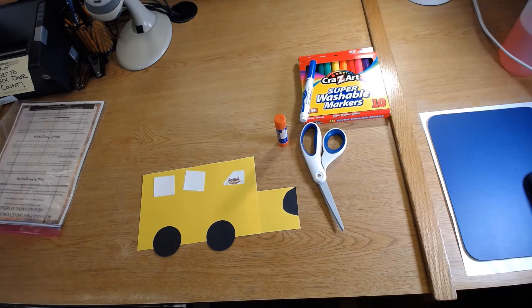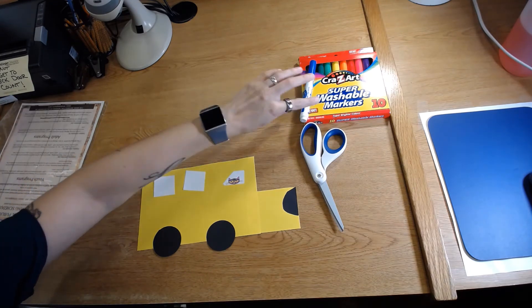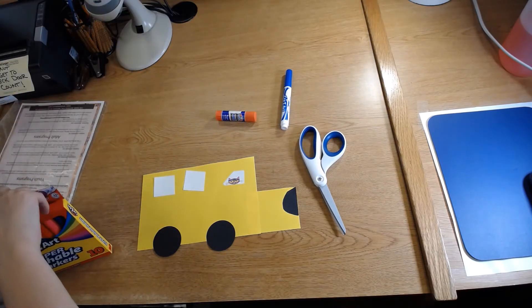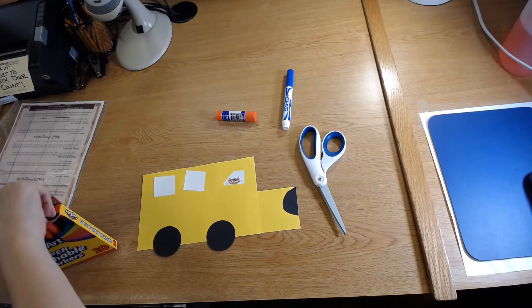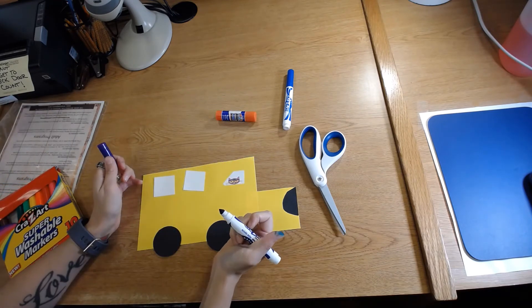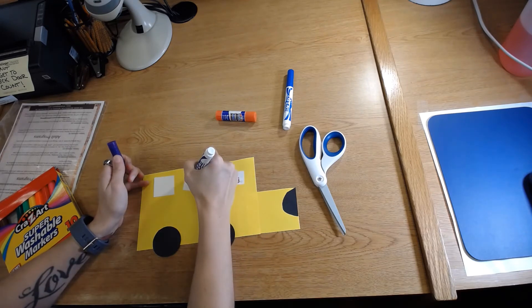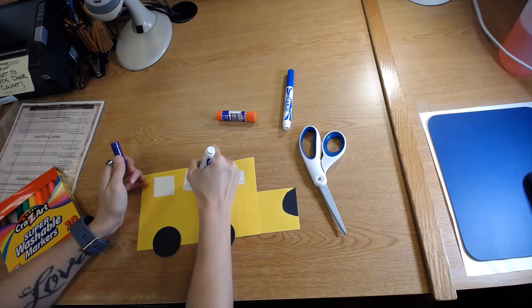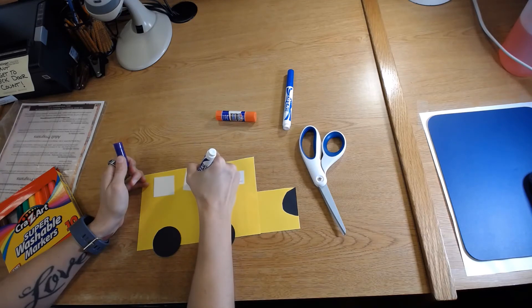Now our final part is to use our markers or colors or crayons or pencils, whatever we've got, to get creative. So Miss Rachel's going to use her purple marker and I'm gonna put my own face out of this window on the bus so that I can be riding along with Pete the Cat.